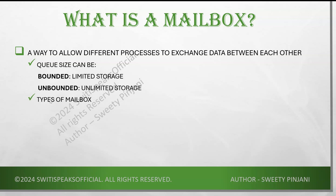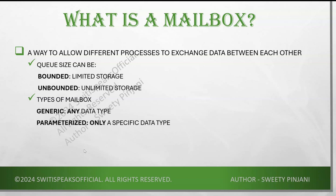The mailbox can be of two types. One is called a generic mailbox, which can send and receive data of any data type. The other is a parameterized mailbox, which is restricted to only a specific data type.